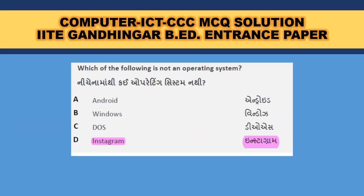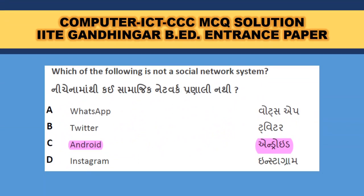Which of the following is not an operating system? Android is an operating system, Windows is also an OS, DOS is a command-based operating system — Instagram is a social media site, so Instagram is the correct answer. Which of the following is not a social network system? WhatsApp, Twitter, and Instagram are social networks. Android is an operating system, so C — Android — is the correct answer.